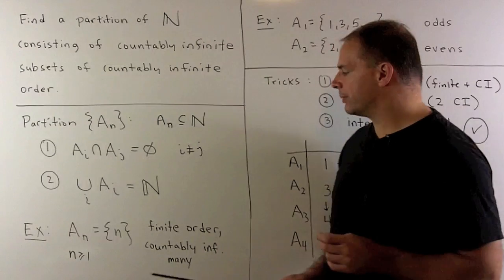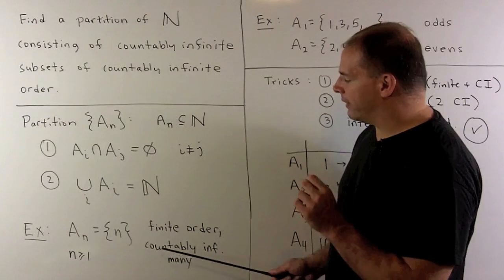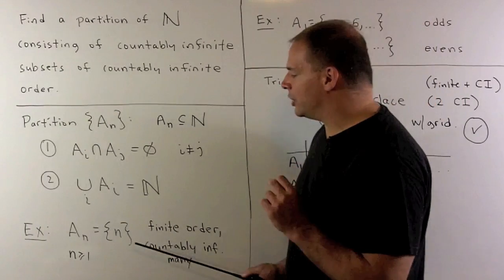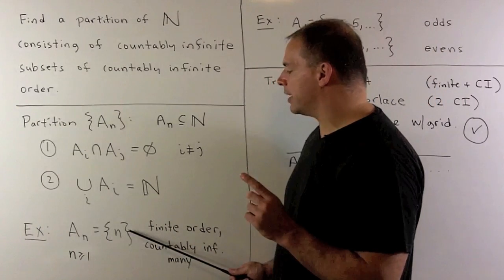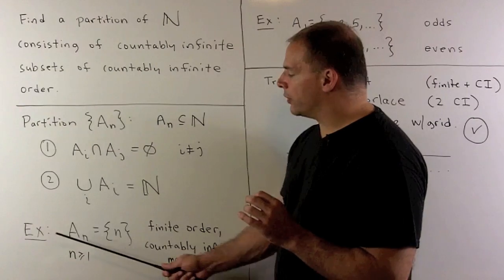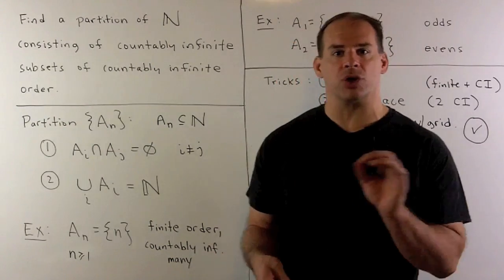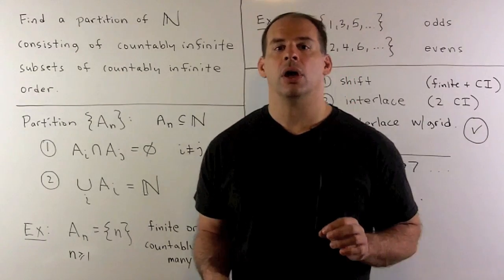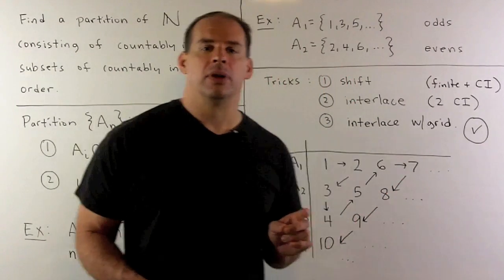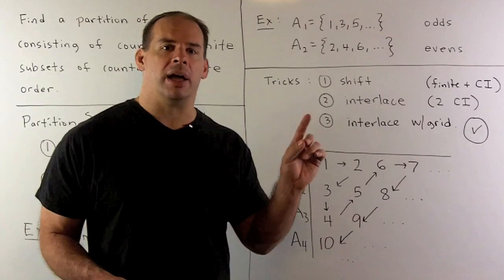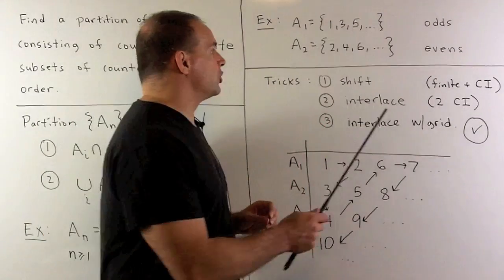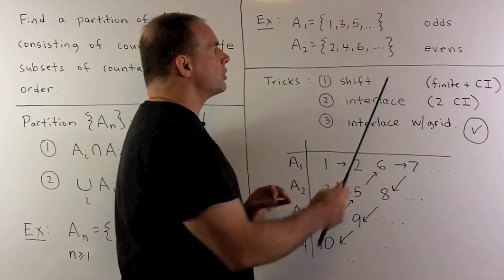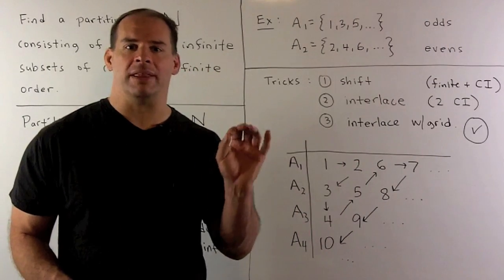For examples: if we have infinitely many subsets but we insist on finite order, we just take each A to be equal to the singleton with element n. The union over all of these gives us the natural numbers, and pairwise intersections are empty. Going in the other direction, I'll have infinitely many subsets but they can have infinite order — just take the odd numbers and the even numbers. Again, the union is the natural numbers and the intersection is the empty set.